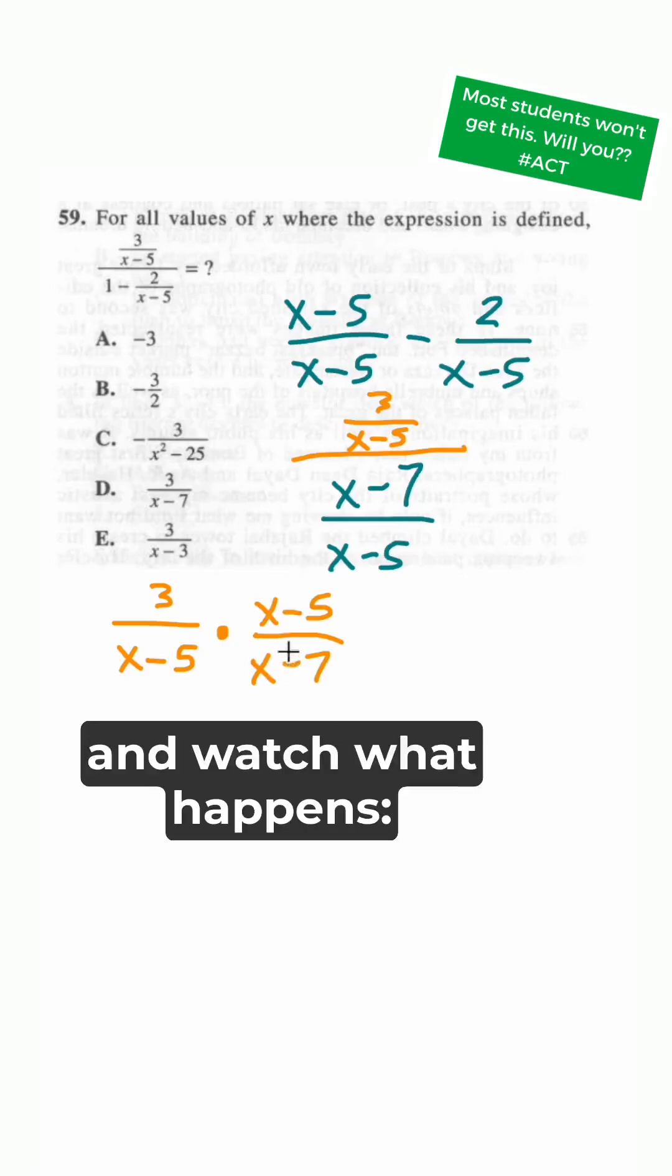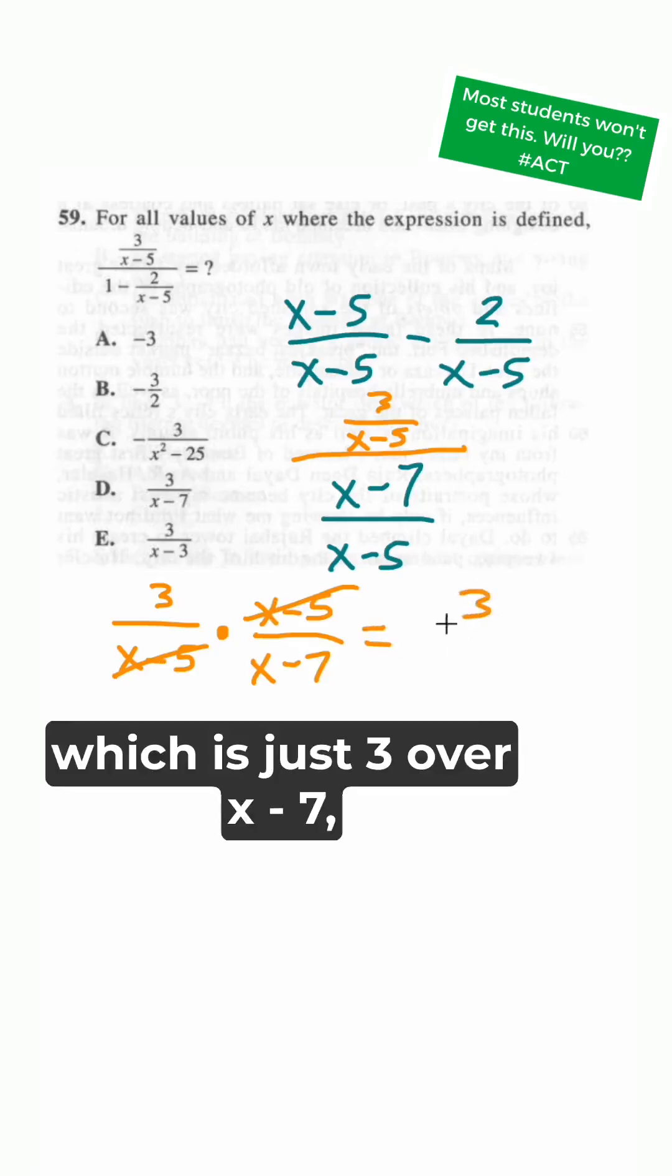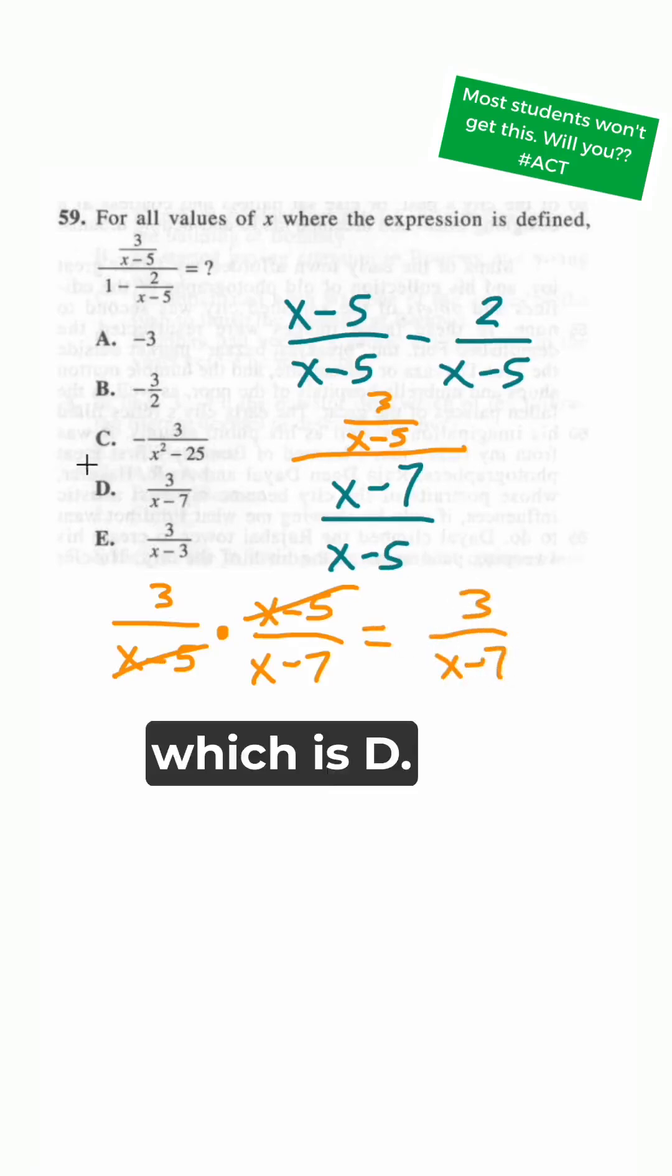Watch what happens. This cancels with this on top and bottom, and we're left with our answer, which is just 3 over x minus 7, which is D.